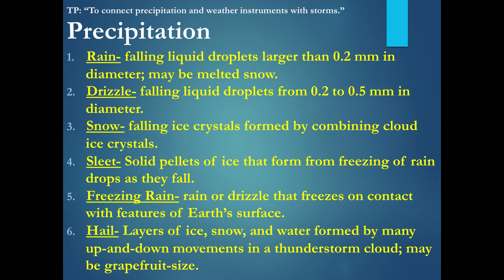There are six types of precipitation, all dealing with temperature. If the temperature is above 32 degrees Fahrenheit or 0 degrees Celsius, it would rain or drizzle. The main difference between the two is that rain has bigger or larger droplets, while drizzle has smaller droplets.